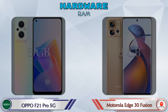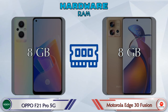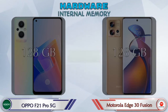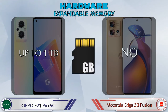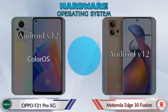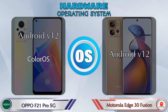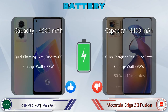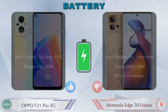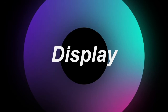RAM is the same in both phones at 8GB. Internal memory is also the same in both phones at 128GB. For expandable memory, the F21 Pro 5G supports up to 1TB, while in the 30 Fusion 5G it's not available. Both phones have the same Android v12 operating system.